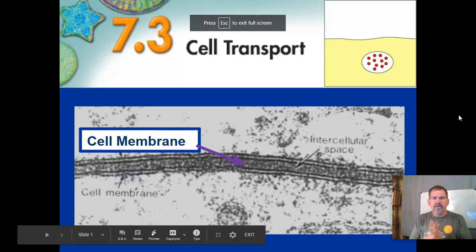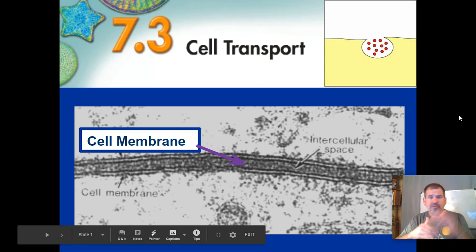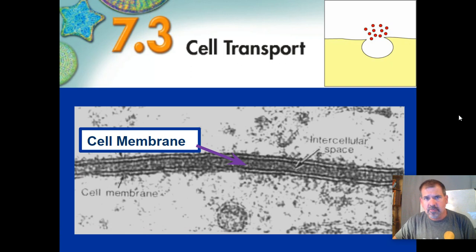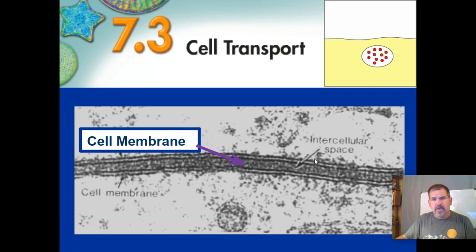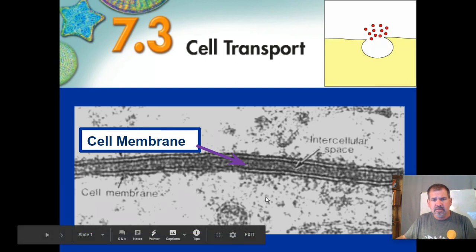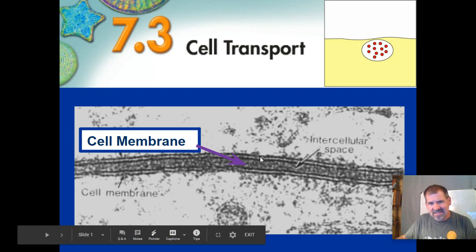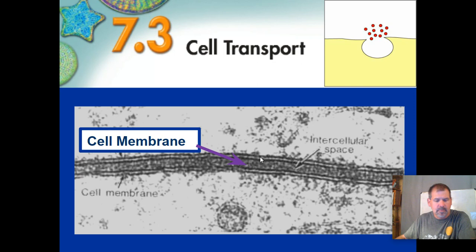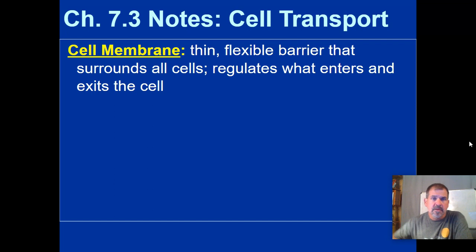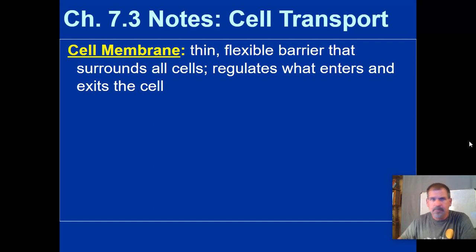Cell transport, section 7.3 — this portion of the notes you'll take on lined paper. Here's just a picture of a couple of cell membranes, showing the inside of cells and two cell membrane images. The cell membrane is a thin, flexible barrier that surrounds all cells and regulates what enters and exits the cell.